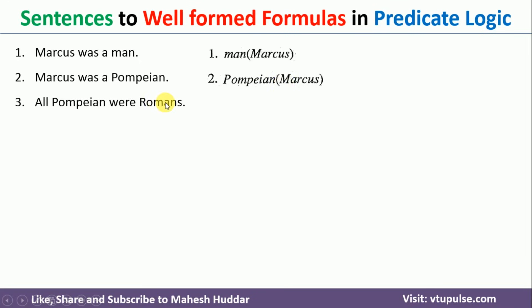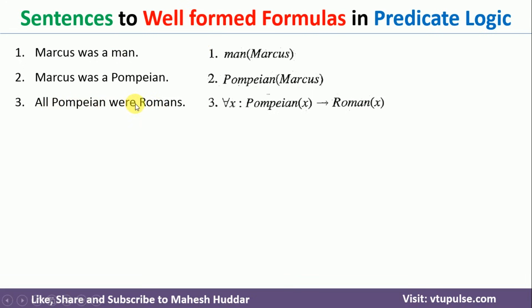Coming back to the third fact: 'All Pompeians were Romans.' In this case we have 'all Pompeians,' meaning we need to consider for all X. If X is a Pompeian, then that particular X is a Roman. So that can be written as: for all X, if X is Pompeian then X is Roman — that is: ∀X: Pompeian(X) → Roman(X).